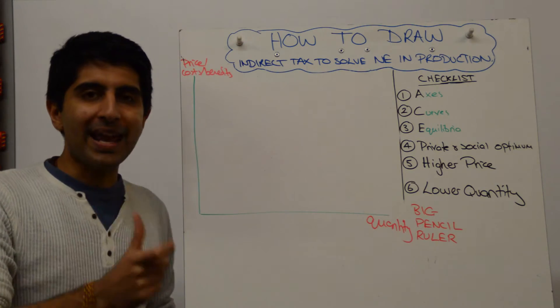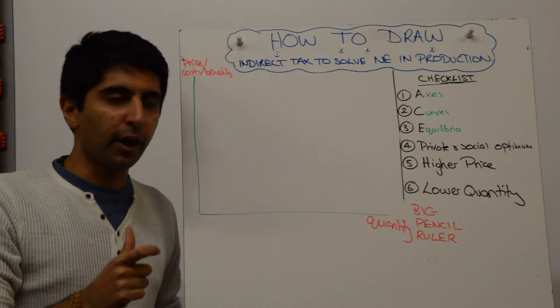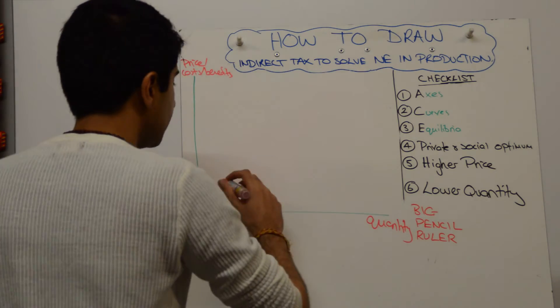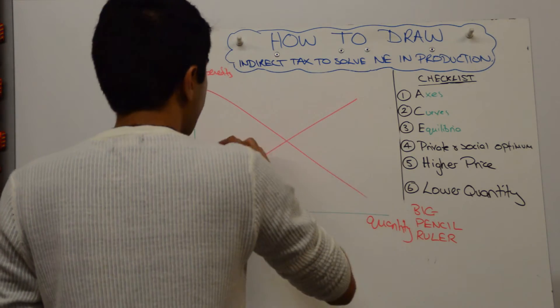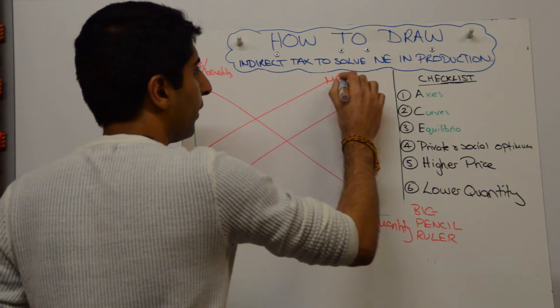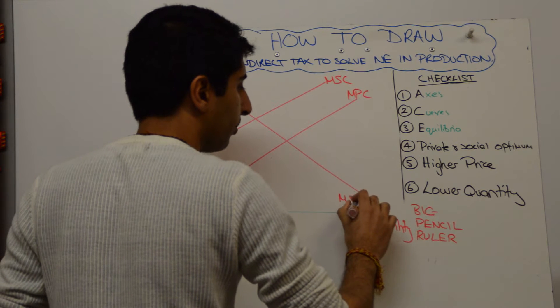We start by drawing the negative externality in production diagram. Lots of videos on my channel to help you with that, so let's start with that. Negative externality in production, MSC is greater than MPC, i.e. to the left of MPC. So let's get all that drawn and labelled appropriately.